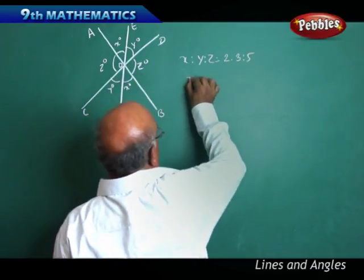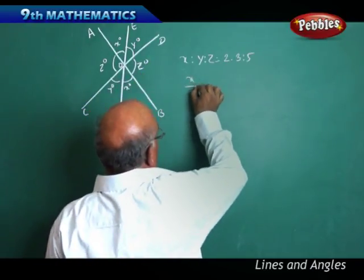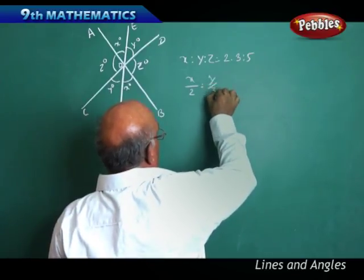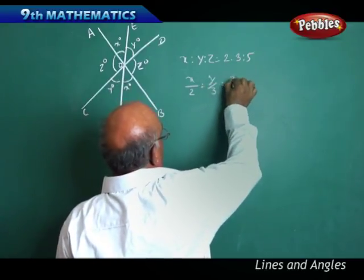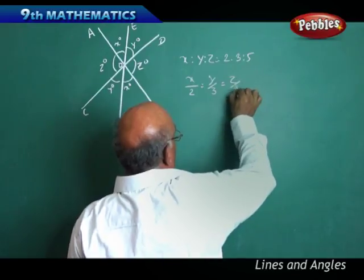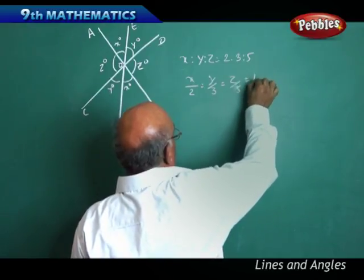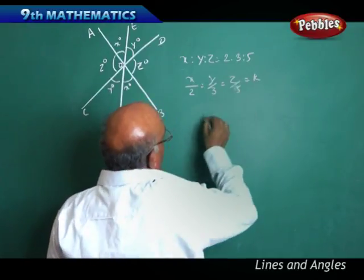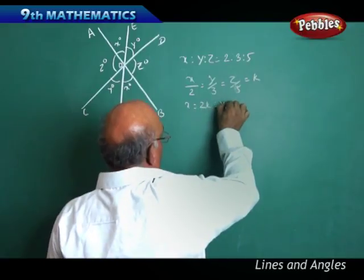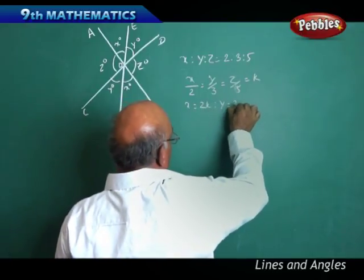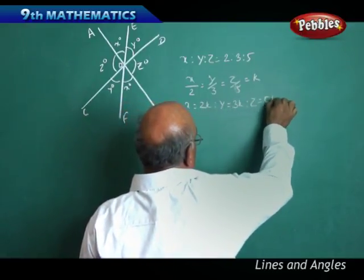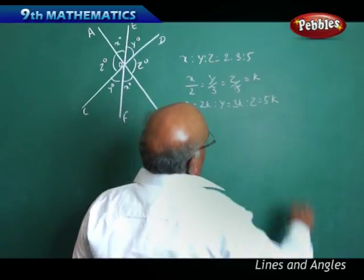This ratio can be written as X/2 = Y/3 = Z/5 = K. Then X is equal to 2K, Y is equal to 3K, and Z is equal to 5K.